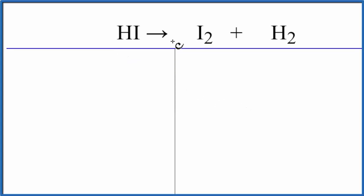In this video, we'll balance HI yields I2 plus H2. That's hydroiodic acid giving us iodine and hydrogen gas.